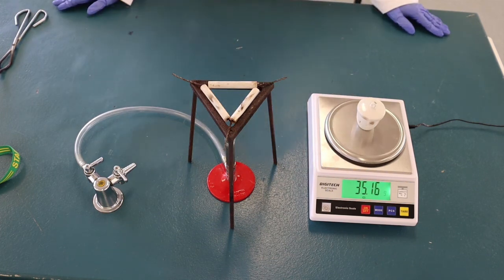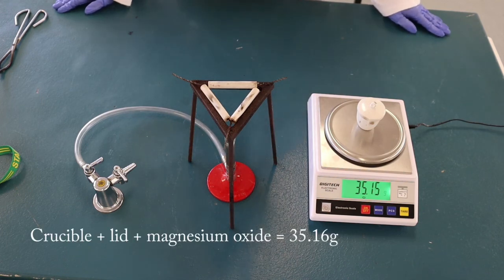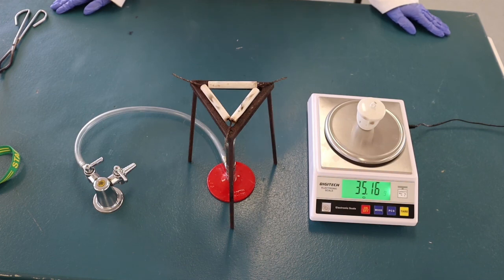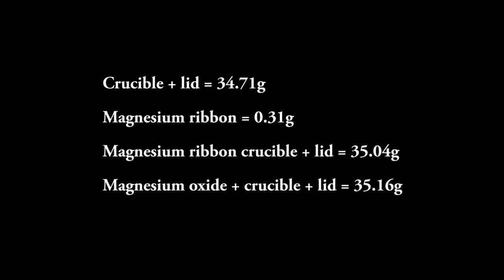The crucible lid and magnesium oxide weigh 35.16 grams. Now that I have given you the masses of each item weighed, you can go ahead and fill in your results table and complete your calculations.